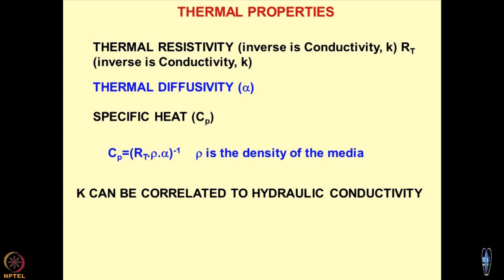Normally, the practice is that by conducting heat migration experiments, we obtain RT directly, and its inverse gives conductivity. Diffusivity is then obtained. If you want to find out specific heat, either you compute it mathematically or use instruments like differential scanning calorimeter (DSC), or simple calorimetric experiments — you take some amount of material, heat it in a calorimeter, and find out how much time is required for the temperature to sustain itself.